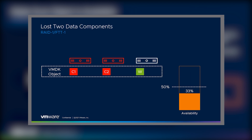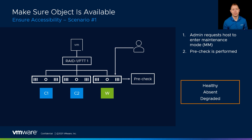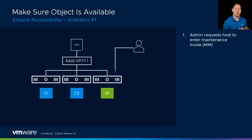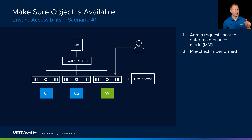So if I take away this node, I still have component one, I still have component two — that's 66% availability. Our administrator comes along and says they want to put this host in maintenance mode. We perform the same pre-checks, making sure we still have access to those objects. Once we've completed those pre-checks, we put the host in maintenance mode and our component changes health states.